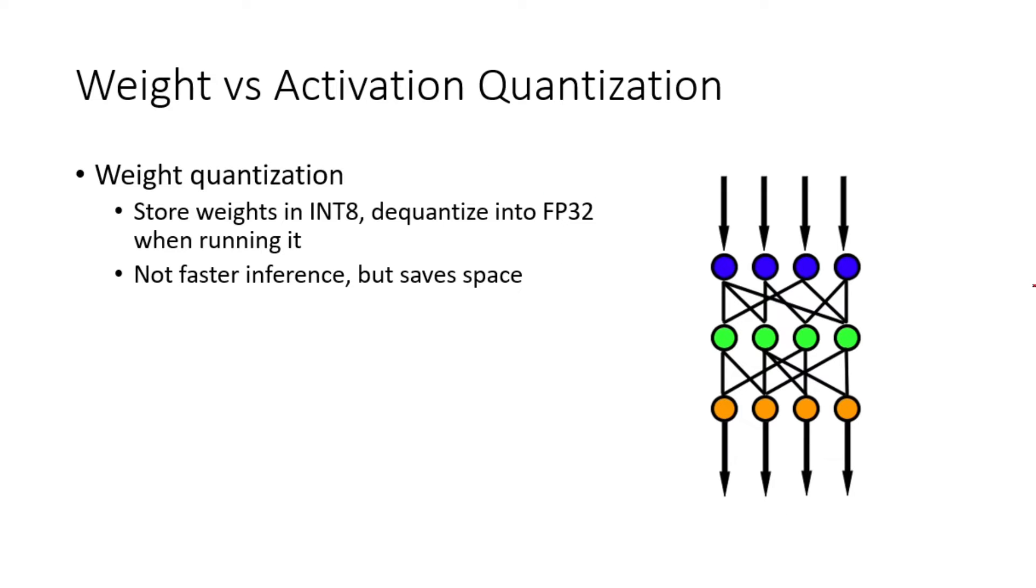Two ways of doing quantization are quantizing the weights and quantizing the activations. In weight quantization, we store all of the weights of the neural network in int8 format, and we dequantize the weights into FP32 when we run it, so that all of the data remains in FP32 format throughout the network. Since everything is being done in FP32, it is not going to be faster than the original model, but this is still useful because it saves space. For example, in mobile devices, making the model four times smaller is a significant improvement.